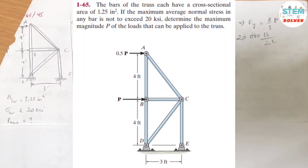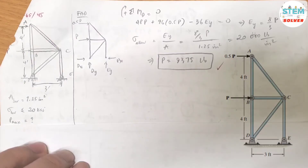The bars of the truss each have a cross-sectional area of 1.25 square inches. If the maximum average normal stress in any bar is not to exceed 20 KSI, determine the maximum magnitude P of the loads that can be applied to the truss.